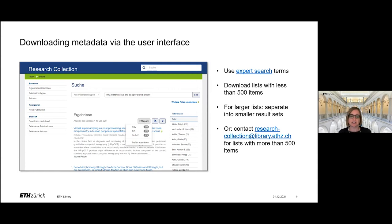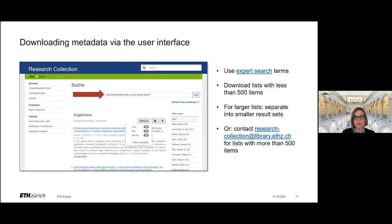So how can you get this metadata? First of all, we recommend that when you want to download a certain list of publications, use the expert search terms. There is a description in our manual which explains how to use the expert search in the research collection search field. For example, here we have a search for a certain organizational code and a certain publication type. And if you need lists of less than 500 items, you can just download them via the export option.